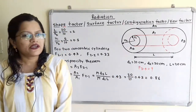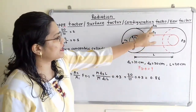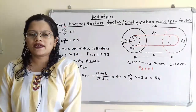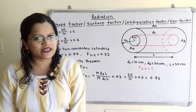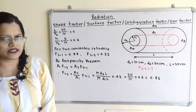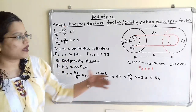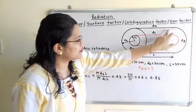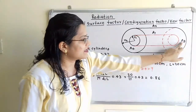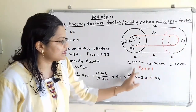Observing the diagram, all surfaces A1, A2, A3, and A4 form an enclosure. We will apply the enclosure theorem to surface areas A1, A2, and A3. By applying the enclosure theorem for surface area A3, we will obtain the shape factor F(3→4).